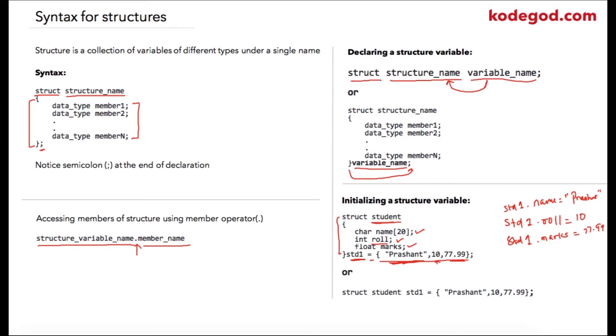In the second method of initialization, once your structure is defined, you write struct, then the structure name, then the variable name, and then you can specify the values for that structure variable.